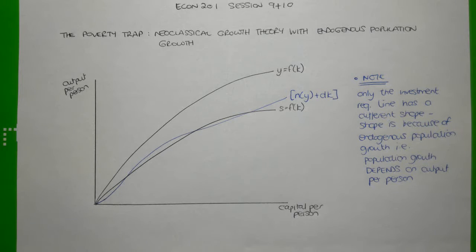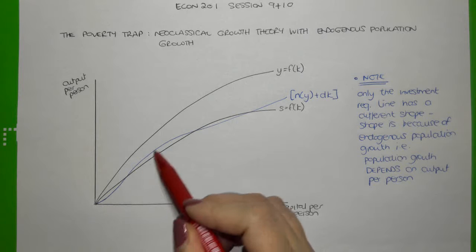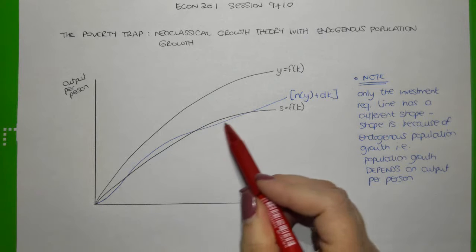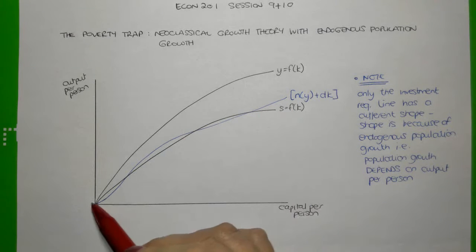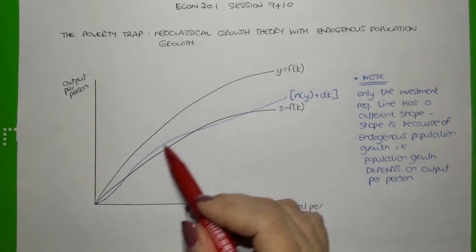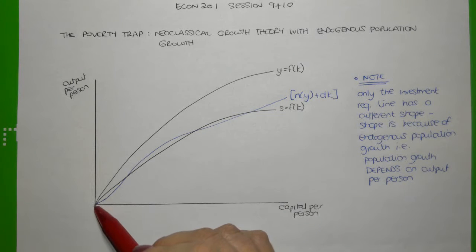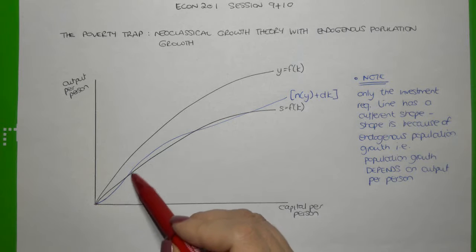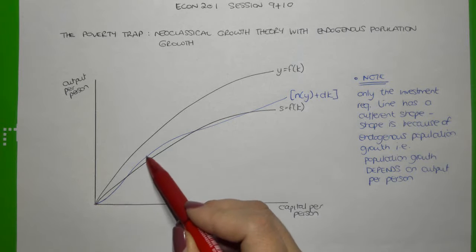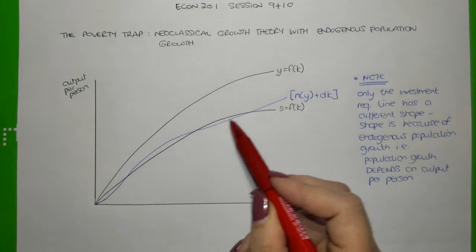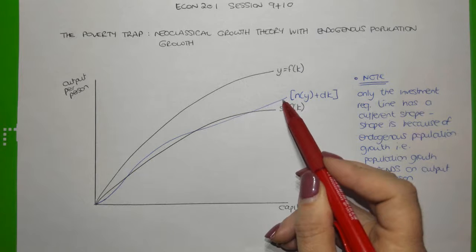What's different in this model, as compared to the standard neoclassical growth theory model, is the shape of the investment requirement line. I've drawn the investment requirement line here in blue, and what you should notice is that it starts off relatively steeply sloped, and then begins to flatten out, and eventually becomes a constant line.